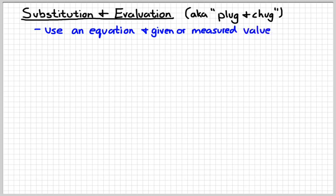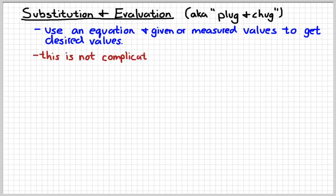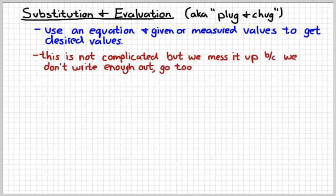Basically what this means is to take an equation and either given values or measured values to solve for a desired value. Now this is something that is really not that complicated. It's something you've been learning in math for a long, long time. But it's still stuff that we mess up.